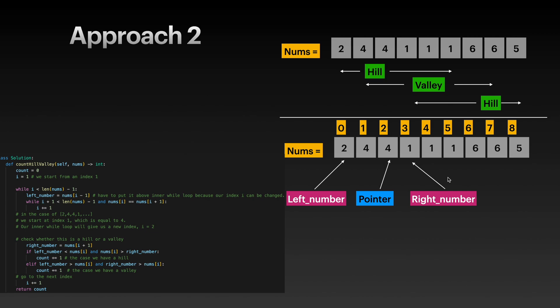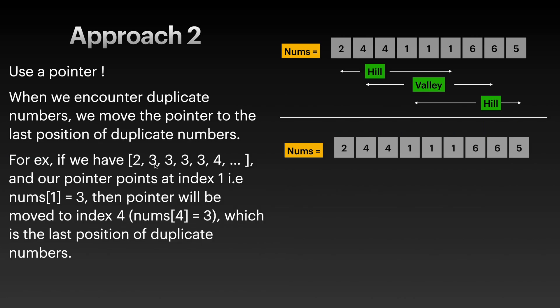Here's the code for Approach 2. We have two while loops, and this inner while loop is where we're moving our pointer to the last index of those duplicate numbers. If I look at this, we have four threes, so our pointer will be moved from here to here.